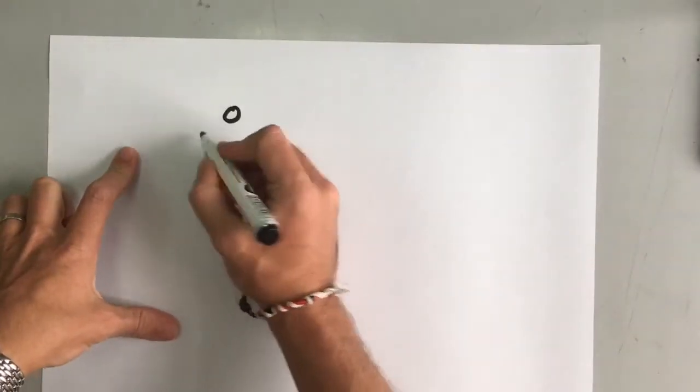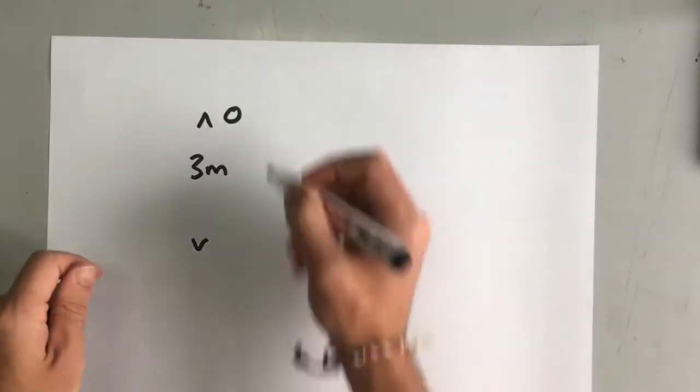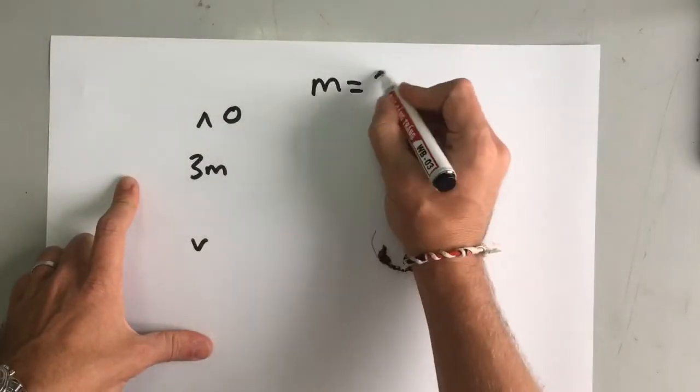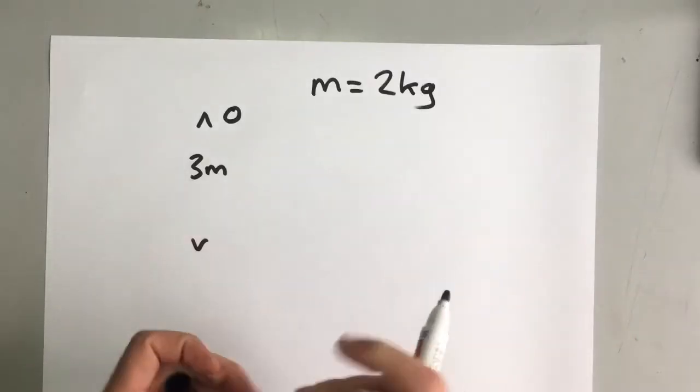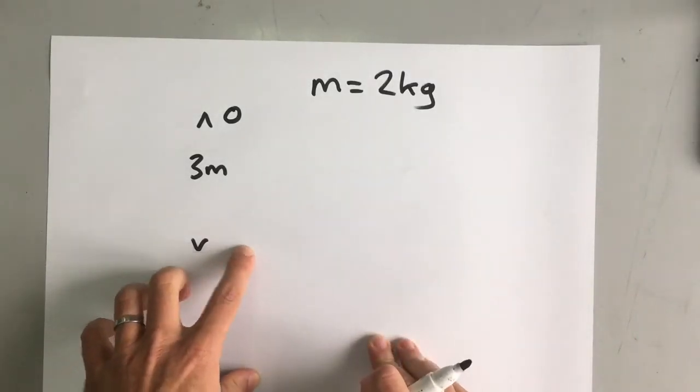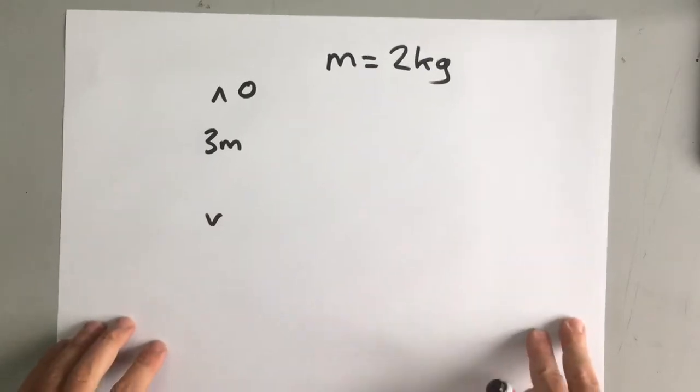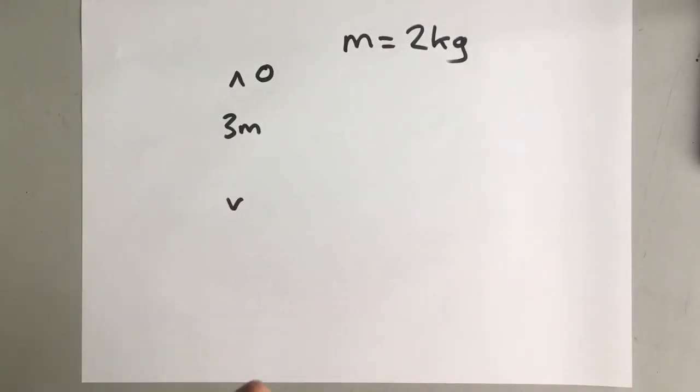Now, we can use that to work out all sorts of different things. For example, if we have a ball and it's three meters above the ground and we know that its mass is two kilograms, then we can calculate how fast it's going to be going at the bottom. We can calculate the potential energy, we can calculate the kinetic energy, and all sorts of useful things like that. I'm going to show you how to do that now.